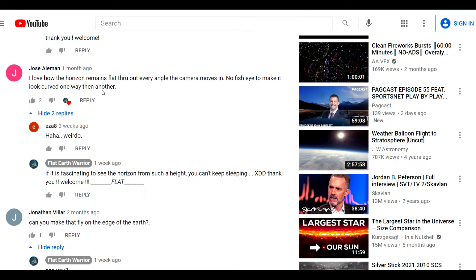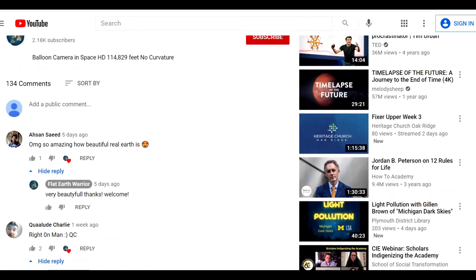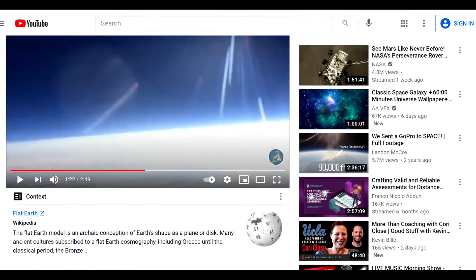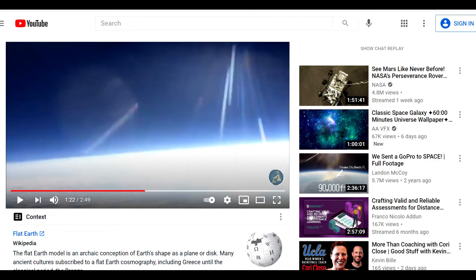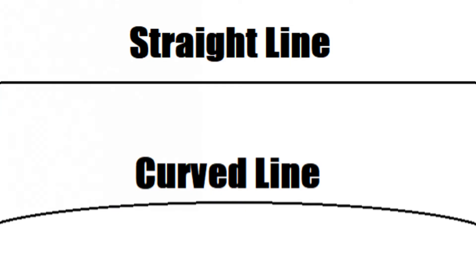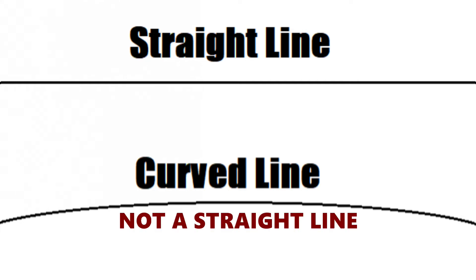So what we're going to do is take a closer look at some of the screenshots of these photos in different positions. Let's get started. Flat Earthers, I do not know what alternative universe you live in, but that top line up there is a straight flat line. The bottom one there is a curved line — it has a curve on it, it is not straight.